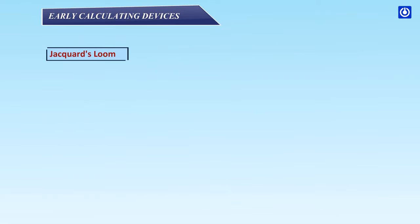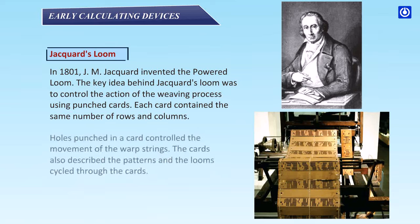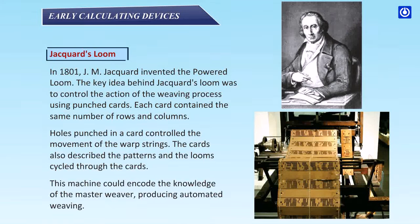Jacquard's Loom: In 1801, J.M. Jacquard invented the powered loom. The key idea behind Jacquard's loom was to control the action of the weaving process using punched cards. Each card contained the same number of rows and columns. Holes punched in a card controlled the movement of the wrapped strings. The cards also described the patterns and the loom cycled through the cards. This machine could encode the knowledge of the master weaver, producing automated weaving.